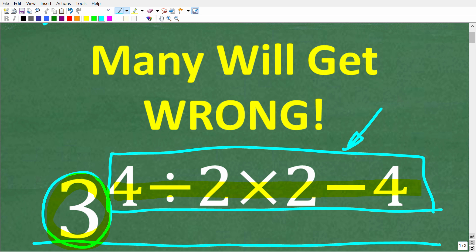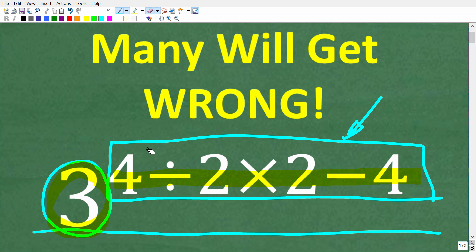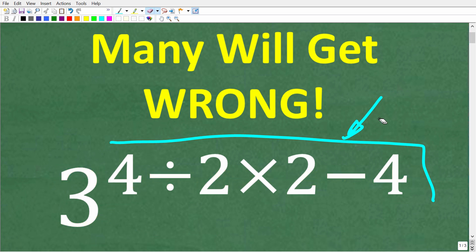Once again, no calculators. What we're dealing with seems pretty simple, but there are a couple areas of this problem that will give many of you trouble. We have 3 to the 4 divided by 2 times 2 minus 4 power. What is the answer?